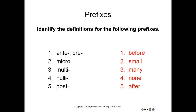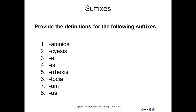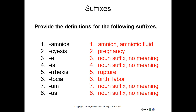And then we have suffixes. -amnios refers to amnion or amniotic fluid. -cyesis means pregnancy. The -e and -is are both noun suffixes with no meaning. -rrhexis means rupture. -tocia means birth or labor. And -um and -us are also noun suffixes with no meaning.